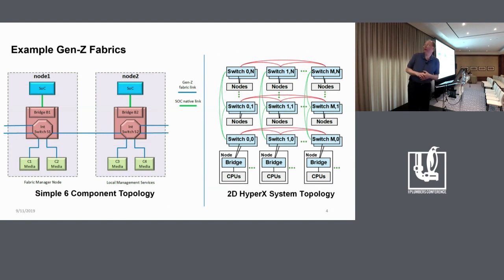Switches can be either stand-alone or integrated in with pretty much any other component type if you want to have switching in that component. On the right-hand side is a far more complicated fabric. It's representative of what you might use in a HPC kind of environment. This is a two-dimensional HyperX, which means that each switch in the fabric is connected directly to all of the other switches in both its row and its column.